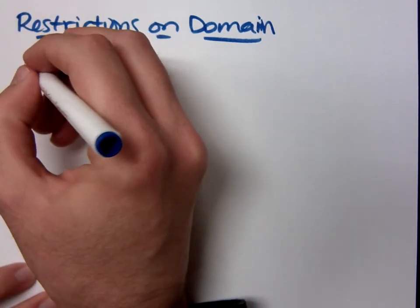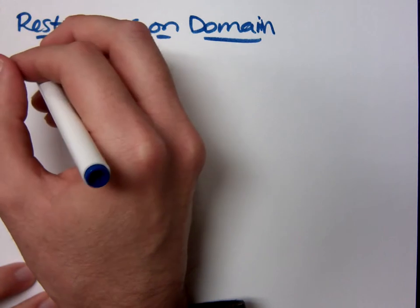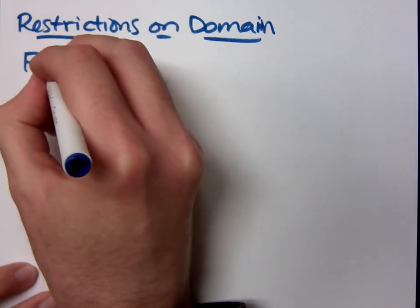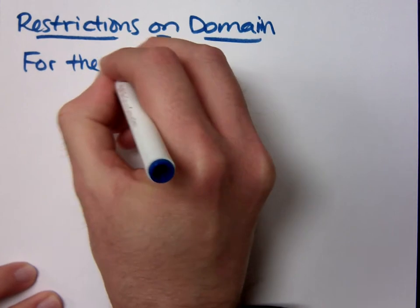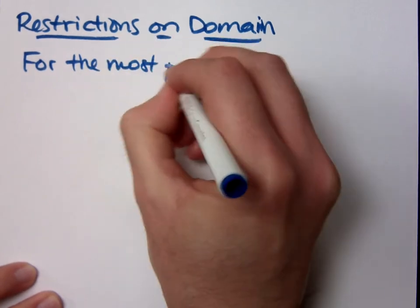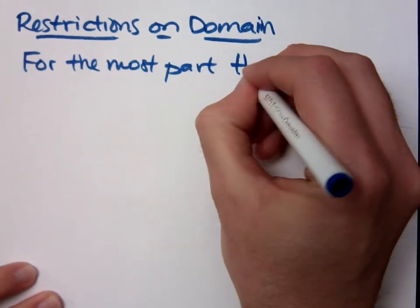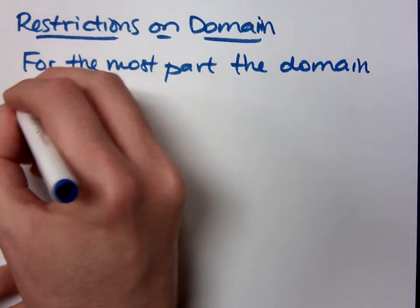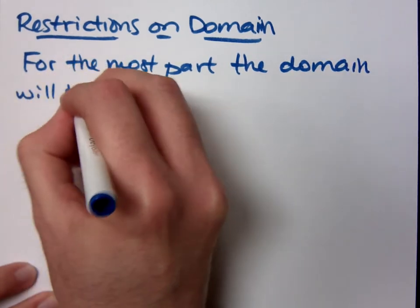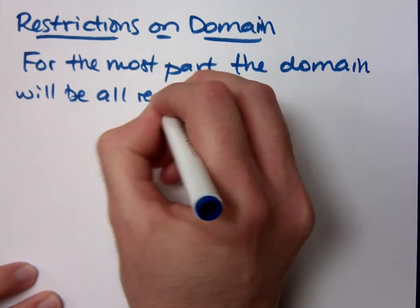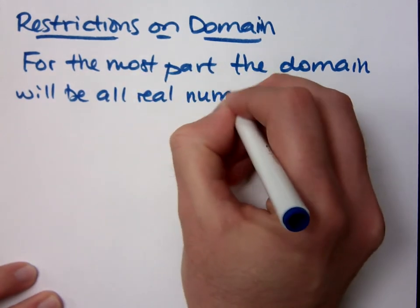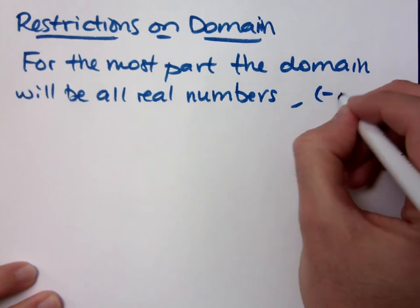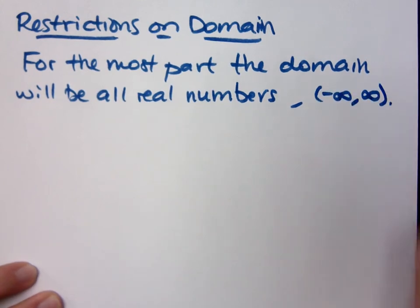So we only have two things that really limit our domain. For the most part, the domain will be all real numbers, negative infinity to positive infinity. Your domain for these expressions will be all real numbers.